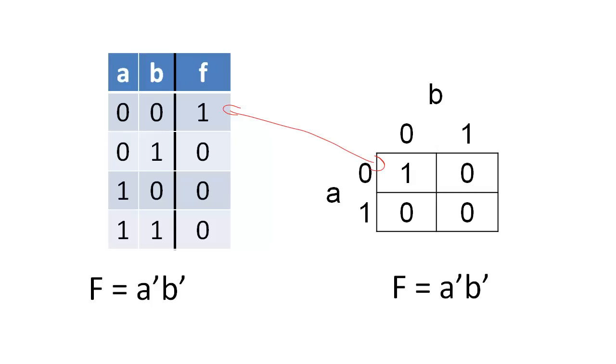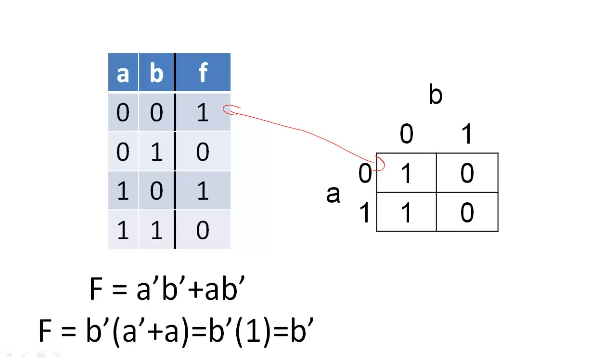For example, if we had a more complex function, we might translate the rows with 1s into a Boolean expression. We could then use a series of distribution, complementarity, and identities to describe the minimal solution. This series of identities works because the two minterms differ by only one literal.